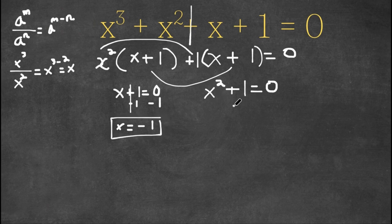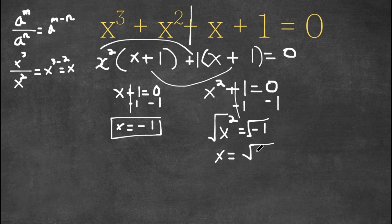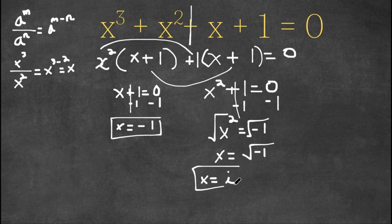Now for x squared plus 1 equals 0, we subtract 1 on both sides — these two cancel out and we get x squared equals negative 1. If we take the square root on both sides, we get x equals the square root of negative 1. And the square root of negative 1 is actually equal to i. So i is also a solution. So our two solutions are x equals negative 1 and x equals i.